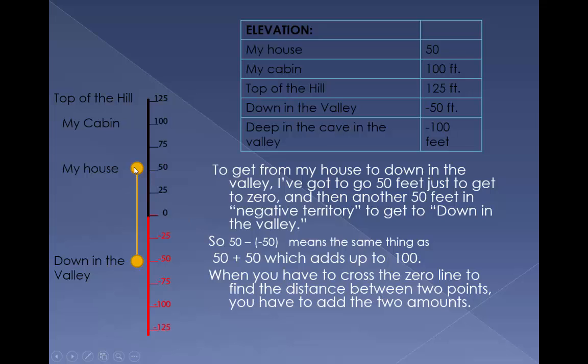To get from my house to down in the valley, I've got to go 50 feet just to get to zero, and then another 50 feet in negative territory to get to down in the valley. That's why 50 minus negative 50 means the same thing as 50 plus 50, which adds up to 100.